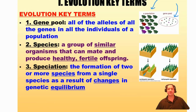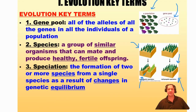The next term is speciation — the formation of two or more species from a single species as a result of changes in genetic equilibrium. In this illustration, we see a population of trees undergoing allopatric speciation, because they have been geographically isolated from one another by a canyon formed by a river. Over time, the one species produced two separate species because they were isolated and could no longer contribute genes to the same gene pool, causing them to diverge. In sympatric speciation, a single species diverges into two species while still inhabiting the same ecosystem.